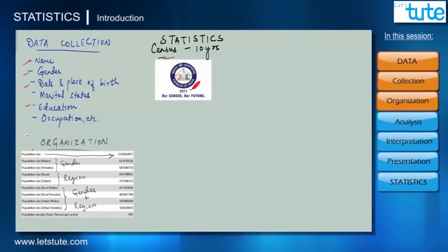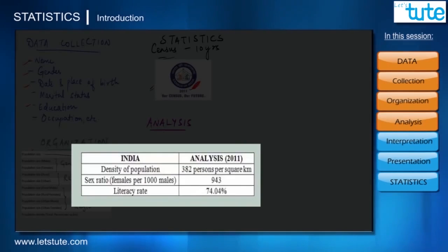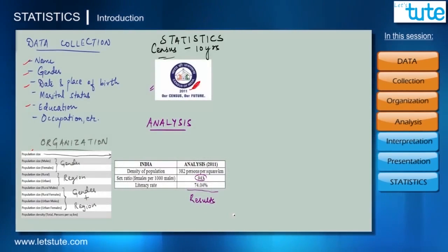Now a systematic organization always leads to an appropriate analysis of data. Like from the recent census of 2011, it was found that the density of population in India is 382 persons per square kilometer. Or the sex ratio which is females per thousand males is 943. So these kind of reports or the analysis is nothing but the results that we get from this kind of data.